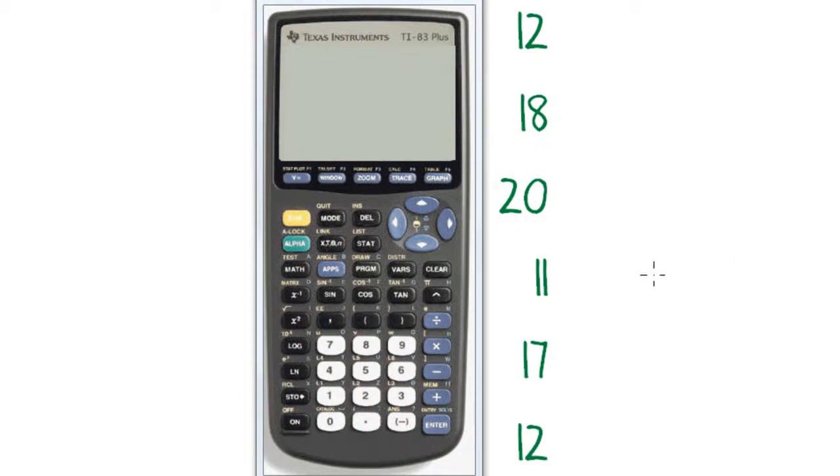Here are the steps for working out summary statistics using your calculator. This is a TI-83 I'm using to demonstrate. The first step is to put the data values, the observations that you have, into the list.